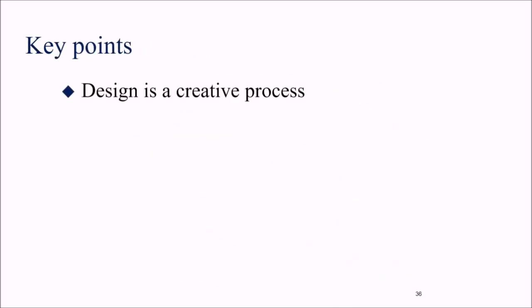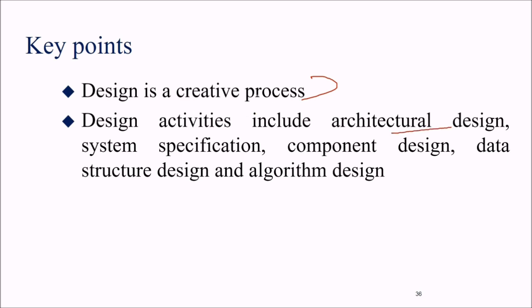Key points: design is a creative process. Design activities include architectural design, system classification, component design, data structure design, and algorithm design. Designing means creating a software blueprint that is traceable to requirements and from which software can be coded. A good design achieves high cohesion, low coupling, high modularity, maintainability, and adaptability — so that if changes come at a later stage, the design welcomes the change.